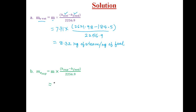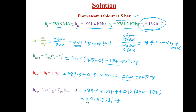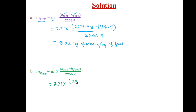In a similar way, equivalent evaporation for superheated steam: mass m = 7.71 kg of steam per kg of fuel burned, enthalpy of superheated steam = 2915.7, minus enthalpy of feed water = 184.5, divided by 2256.9. On further simplification, equivalent evaporation of superheated steam works out to be 9.33 kg of steam per kg of fuel.